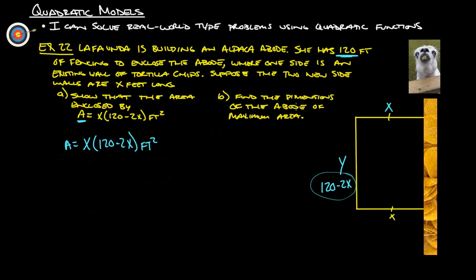Moving on to B, find the dimensions of the abode of maximum area. So we want this to be of maximum area. That means, basically what's going to happen is this graph here, if we're going to graph it, it's going to look like this right here is going to be our maximum area.